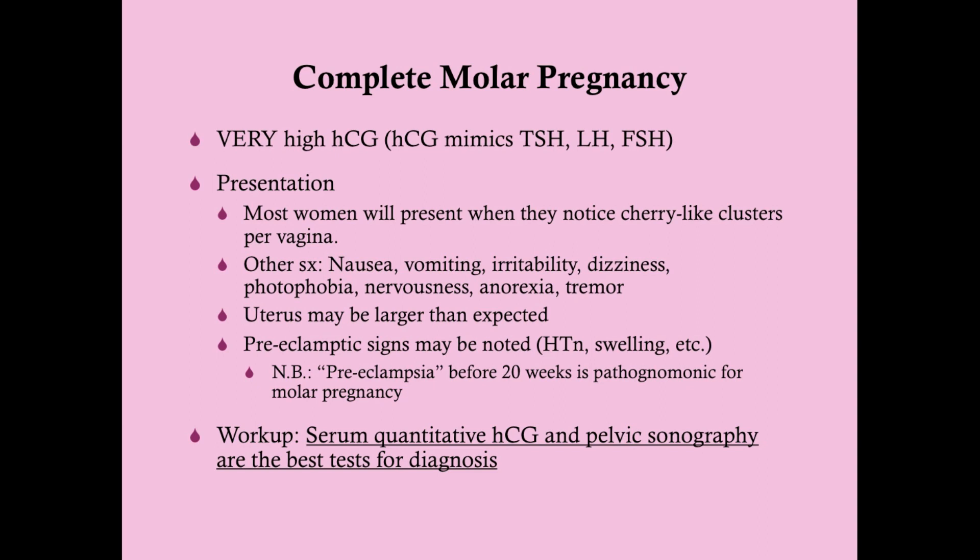You can also see nervousness, anorexia, and tremor — that is because of elevated HCG mimicking TSH, which can cause hyperthyroidism. Another finding you may detect on bimanual exam or more likely on sonography is ovarian masses called thecalutein cysts, which result from elevated LH and FSH.